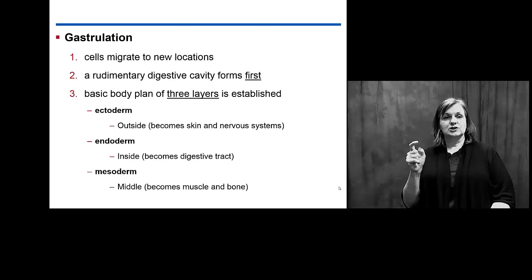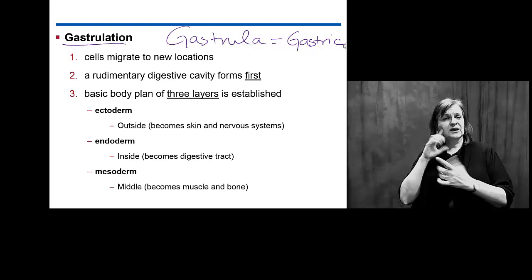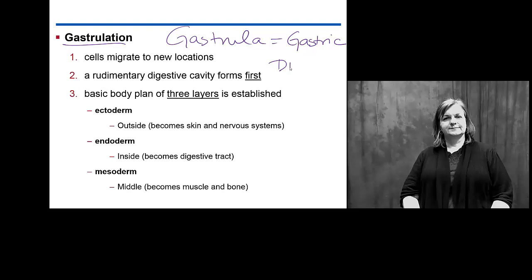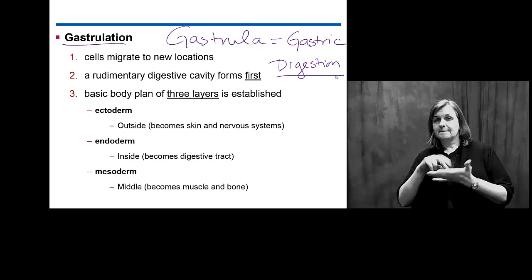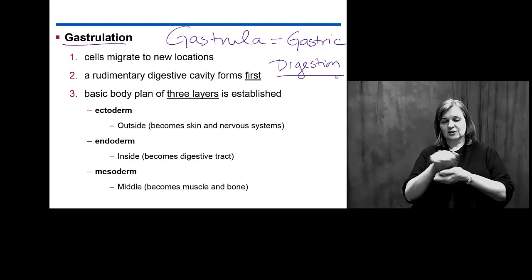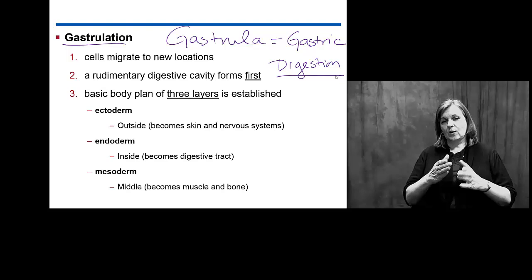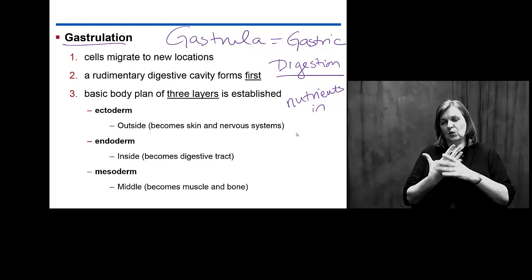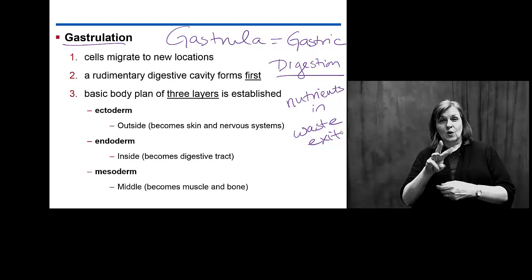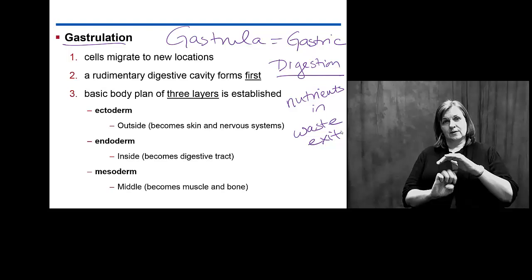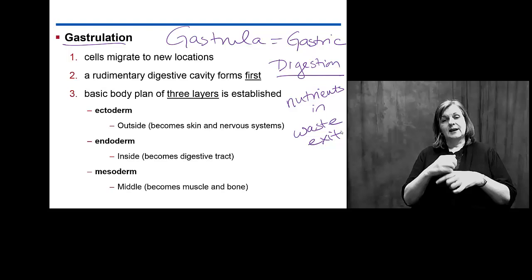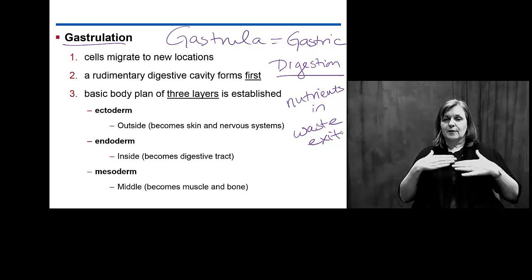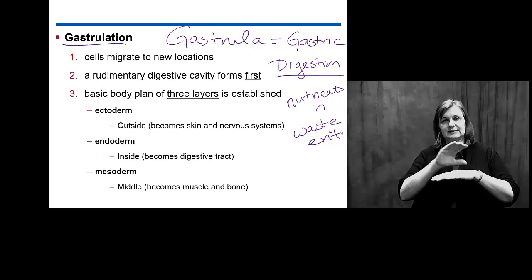The second stage is something known as gastrulation. Gastrula or gastric might be a term you have associated before with digestion. Gastrulation is the formation of a digestive tract, and by doing that — by forming a digestive tract — we're providing a pathway for nutrients to enter and waste to exit. Nutrient in and waste out is critical to the formation of the embryo, and as we perform this phase and form this digestive cavity, we set up the basic body plan for the rest of your development.